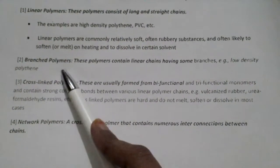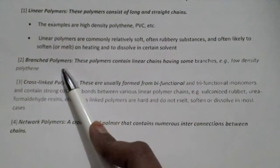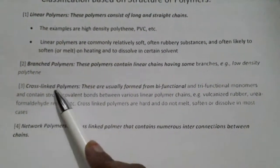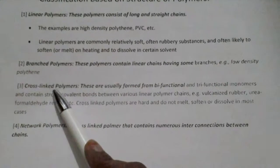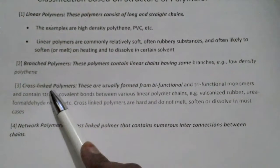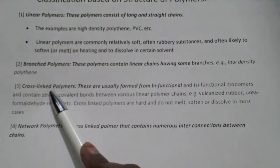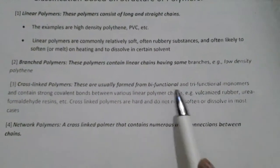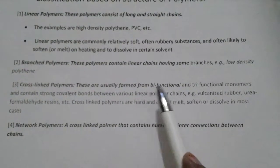Polythene high density comes under linear polymer, and polythene low density comes under branched polymers. The third one is cross-linked polymers.